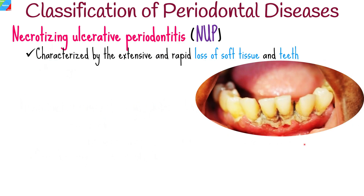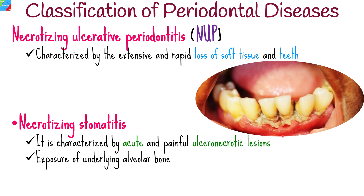Necrotizing ulcerative periodontitis is the third type, which is characterized by the extensive and rapid loss of soft tissue in teeth. The fourth type is necrotizing stomatitis, which presents with acute and painful ulcero-necrotic lesions on the oral mucosa that expose underlying alveolar bone.